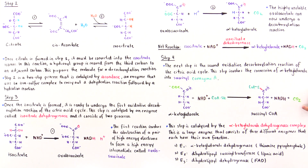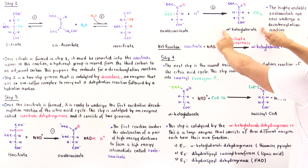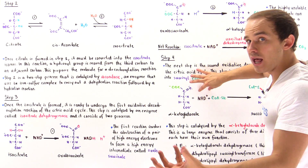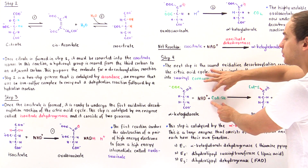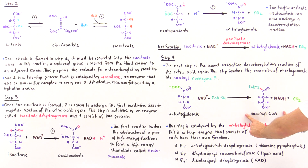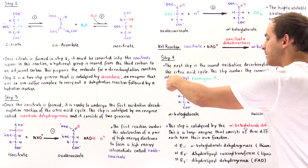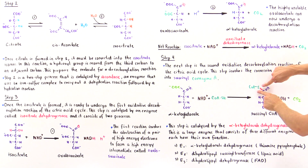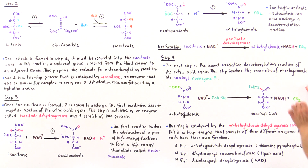The net reaction of step four: alpha-ketoglutarate + NAD+ + CoA → succinyl-CoA + NADH + CO2. The carboxylate component is removed as CO2 and coenzyme A is attached to form a high-energy thioester bond in succinyl-CoA. This high-energy thioester bond will be broken in subsequent steps of the citric acid cycle.